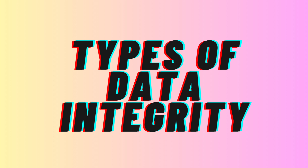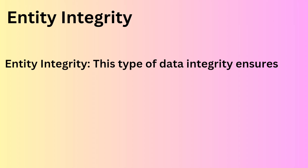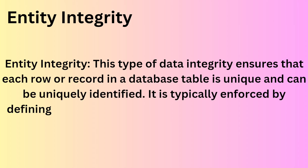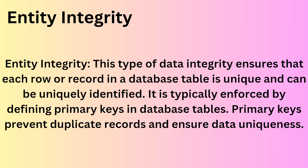Now let's go to the types of data integrity. Entity integrity: this type ensures that each row or record in a database table is unique and can be uniquely identified. It is typically enforced by defining primary keys in database tables, which prevent duplicate records and ensure data uniqueness.